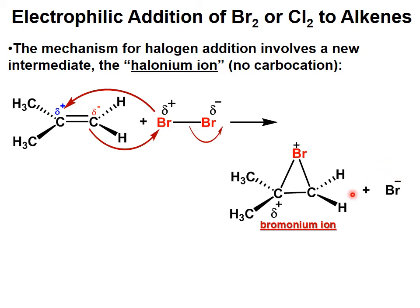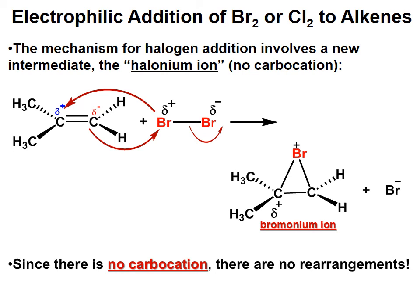Here's the Br minus that's going to be the nucleophile in the next step. This bromonium ion, I've drawn it as being on the top of what was the alkene — there's a 50-50 chance it could also form on the bottom. Because of this bromonium ion and since there is no carbocation, there are no rearrangements. Let me emphasize this: when you use Br2 or Cl2, do not draw a carbocation in the mechanism. It's wrong — it does not happen.